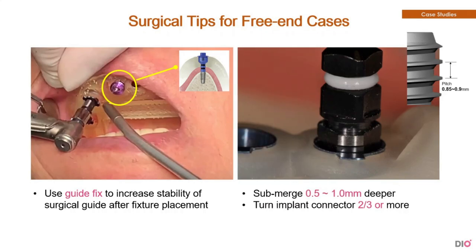Lastly, there is a method of submerging the fixtures 0.5 mm to 1 mm deeper than the original plan. The UF2 fixture has a pitch spacing of 0.85 to 0.9 mm for each thread, so you can submerge to the desired depth simply by turning two-thirds or more. Also considering that there are three hex sides of the DioNavi implant connector, the submerged depth can be adjusted by turning two sides or just one more turn.